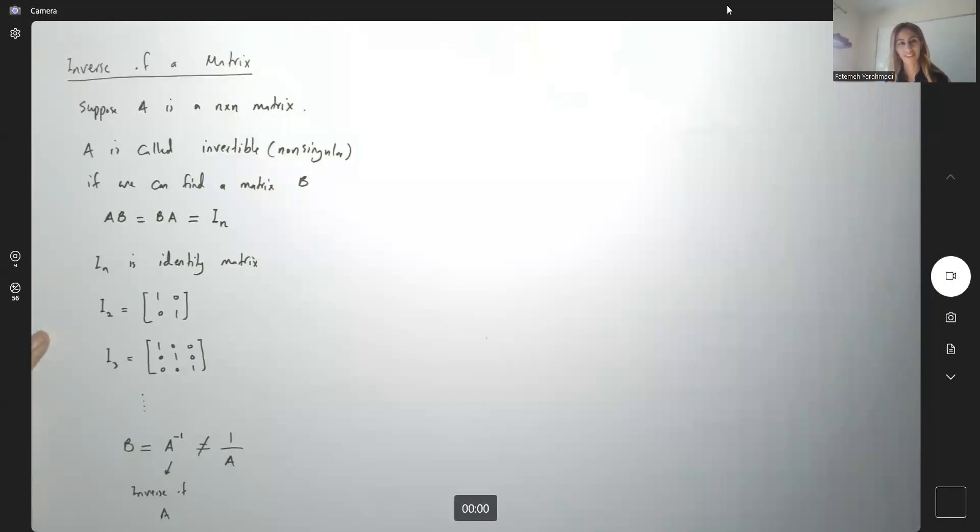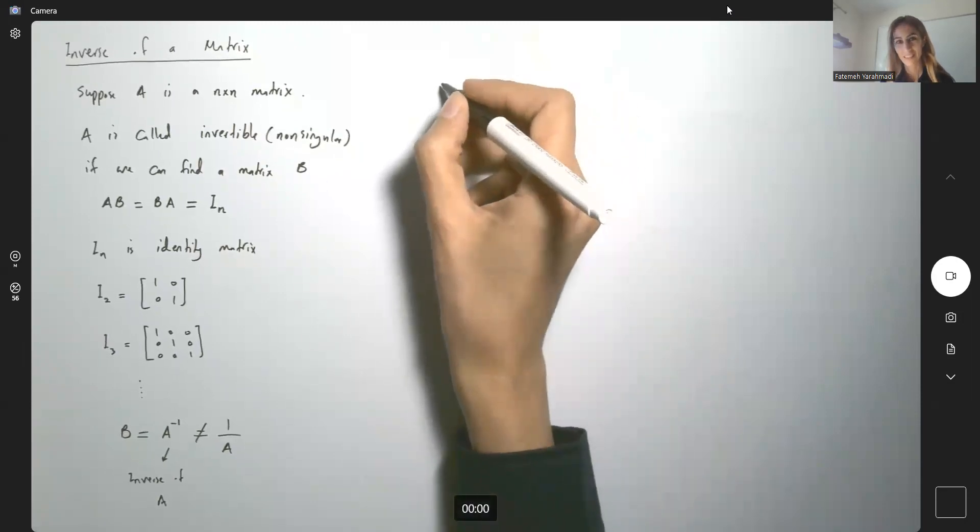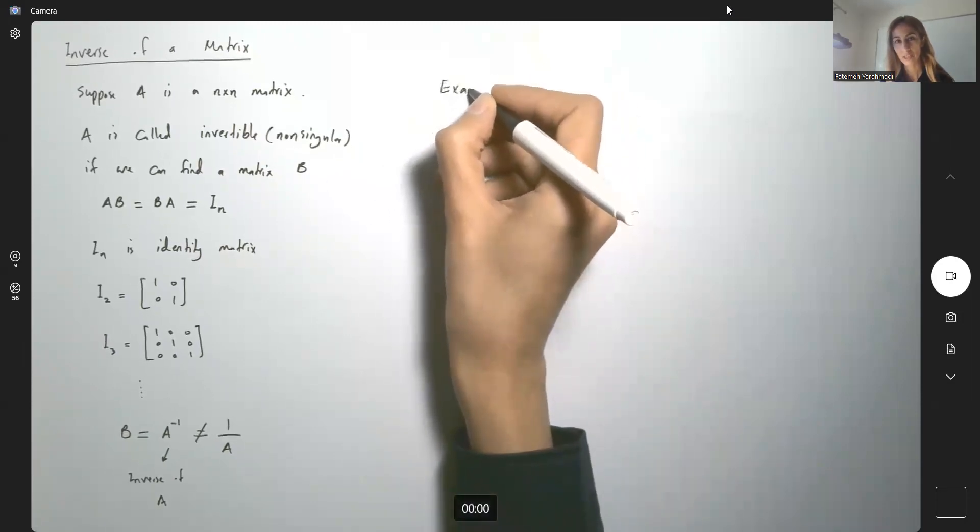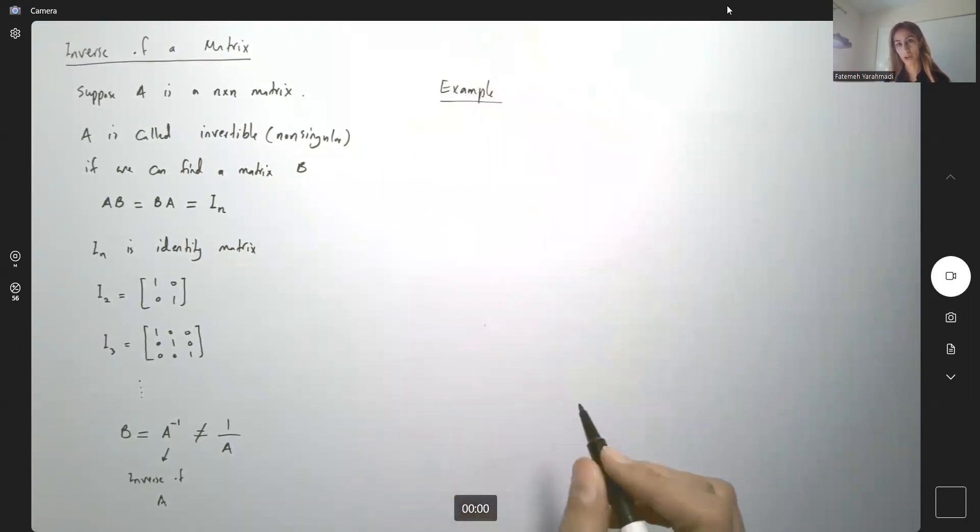So here's the definition of the inverse of a matrix. Let's go over one example together. For now we're going to just check to see if a matrix is inverse of another matrix. Later on we're going to go over the process.